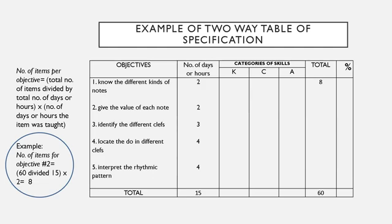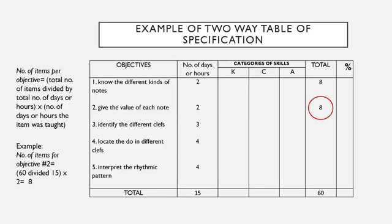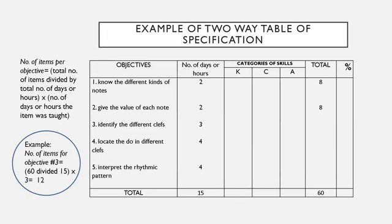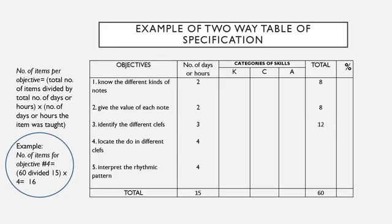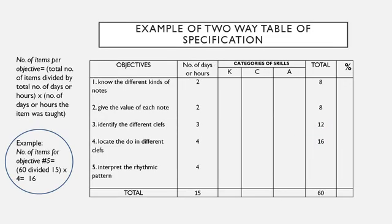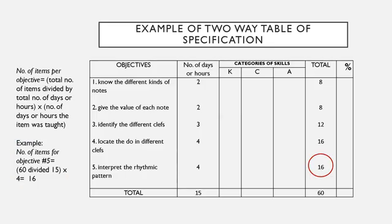For objective number two: 60 divided by 15, which is 4, multiplied by 2, because objective number two was discussed in two days — the answer is 8. For objective number three: the same formula, but with three days, so the total is 12 items. For objective number four: 60 divided by 15 multiplied by 4, because objective four was covered in four days — the answer is 16. For objective number five, we also have 16 items.